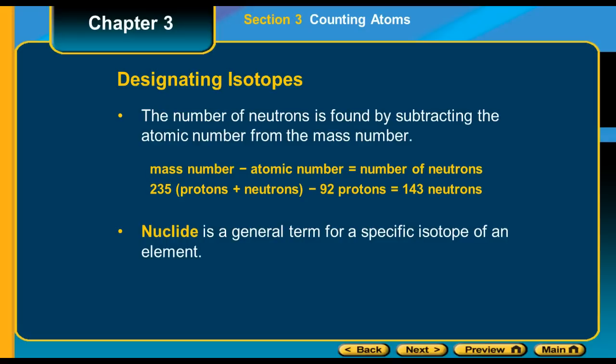The number of neutrons is found by subtracting the atomic number from the mass number. So if we're dealing with the uranium-235, as we were in the previous screen, you take 235, which is a mixture of both the protons and neutrons, and you're going to subtract the atomic number, which is the number of protons. So we're taking 235 minus 92, and that'll leave us with the number of neutrons. So in this case, 143.